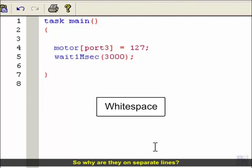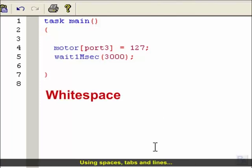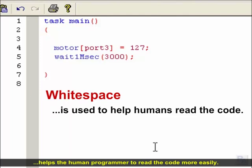So why are they on separate lines? For the programmer. Remember that programming languages are designed for humans and machines to communicate. Using spaces, tabs, and lines helps the human programmer to read the code more easily. Making good use of spacing in your program is a very good habit for your own sake.